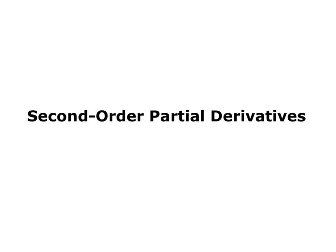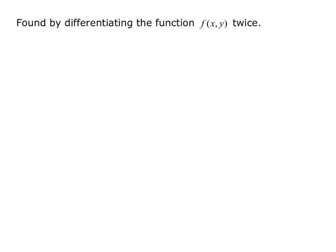Now that you have a basic understanding of partial derivatives, we're going to move forward with second-order partial derivatives, which is basically the equivalent of a second derivative where you have more than one variable in your function. These are found by differentiating the function f of xy twice, and there are several ways to do this. When we were back in Calc 1, f double prime — our second derivative — would just be taking the derivative with respect to x twice. But here we have more than one variable, so we actually have four options, and they have a special notation.